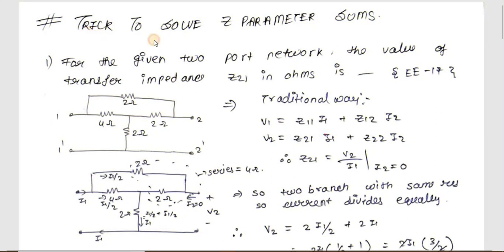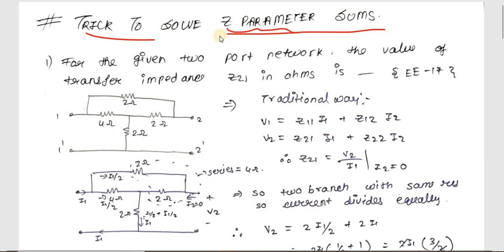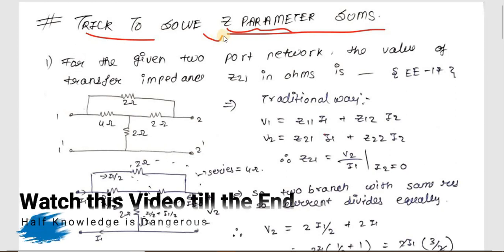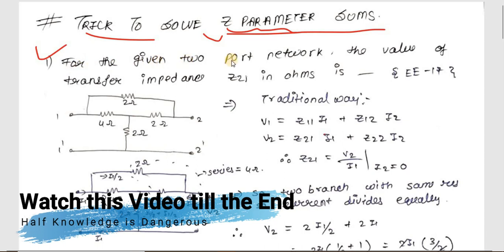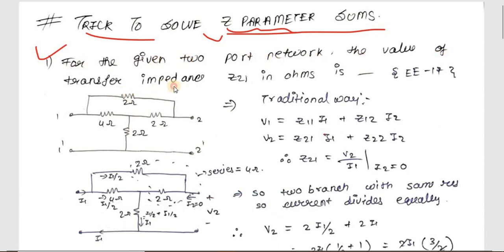Hello friends, today we are going to see the trick to solve Z-parameter sums. In this video we are going to solve all complicated sums that were asked on the Z-parameter in GATE exams. We are also going to solve one of the GATE 2020 sums and apply the same trick there. So watch this video till the end. Starting with the first sum: for the given two-port network, find the value of transfer impedance Z21 in ohms — this sum is from GATE 2017.